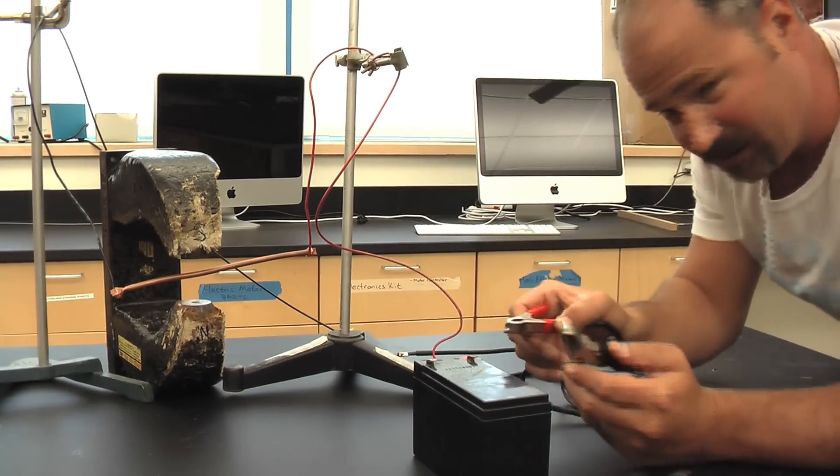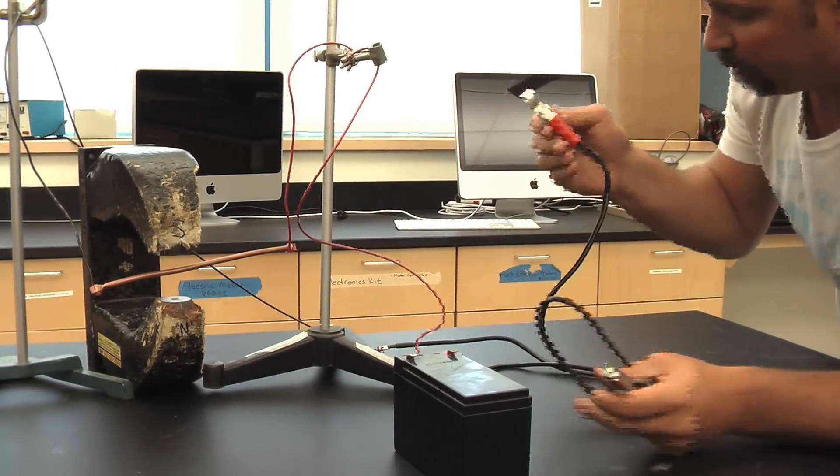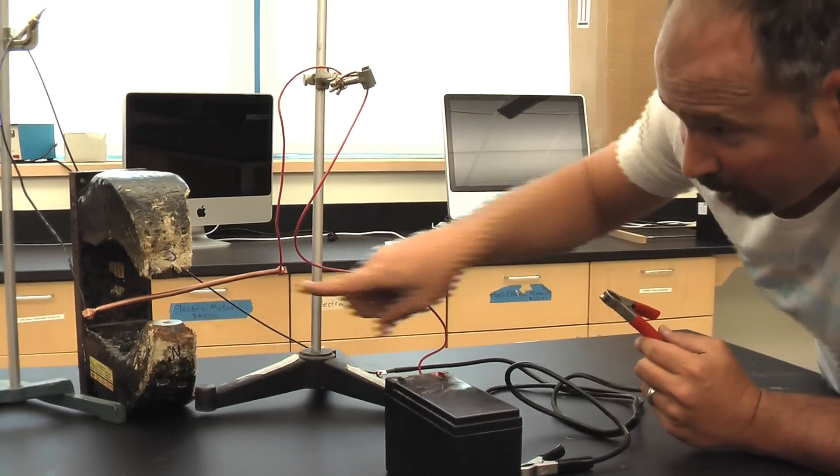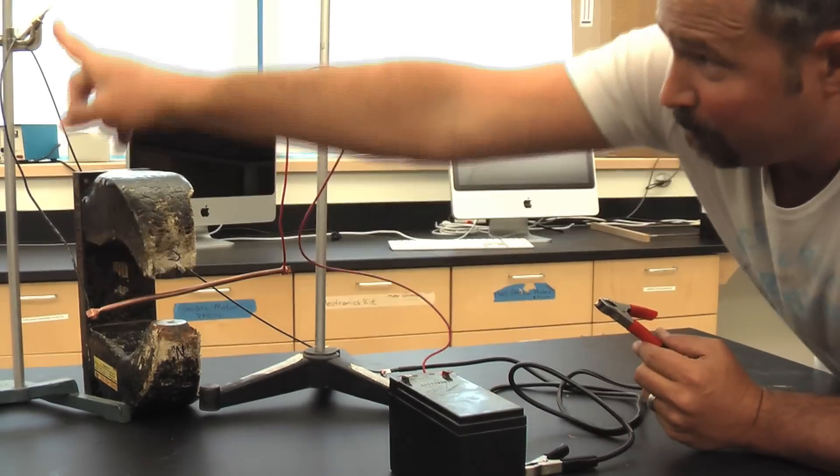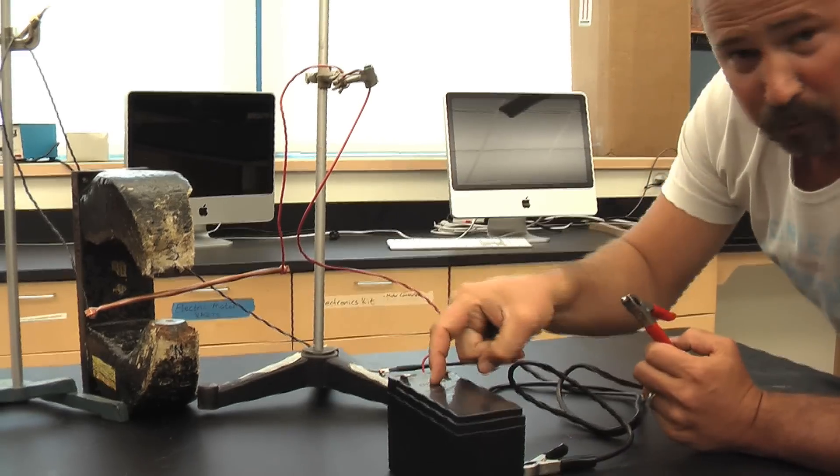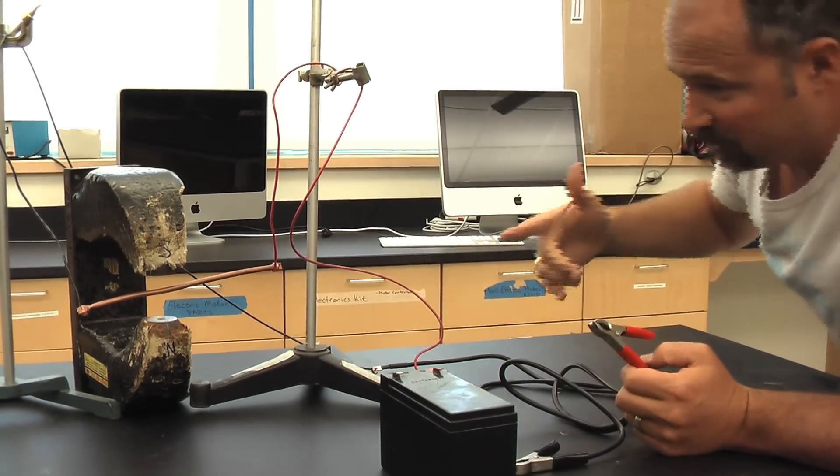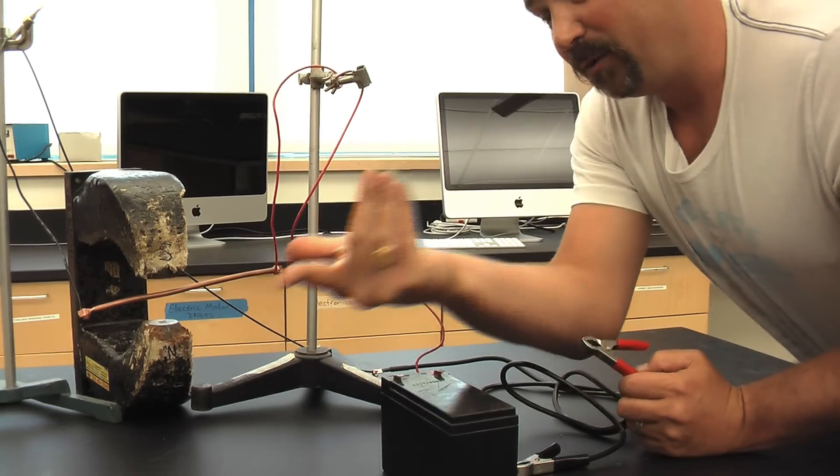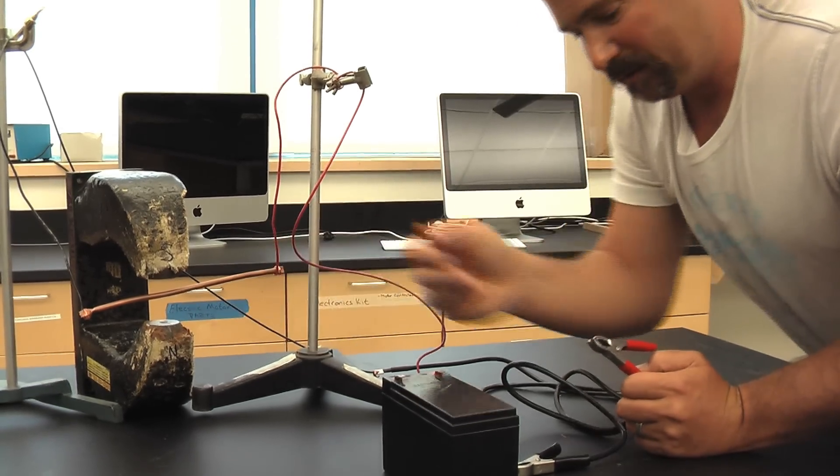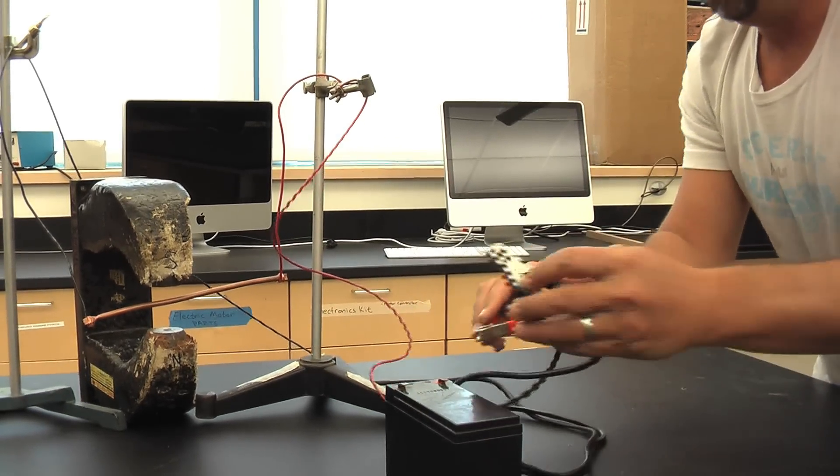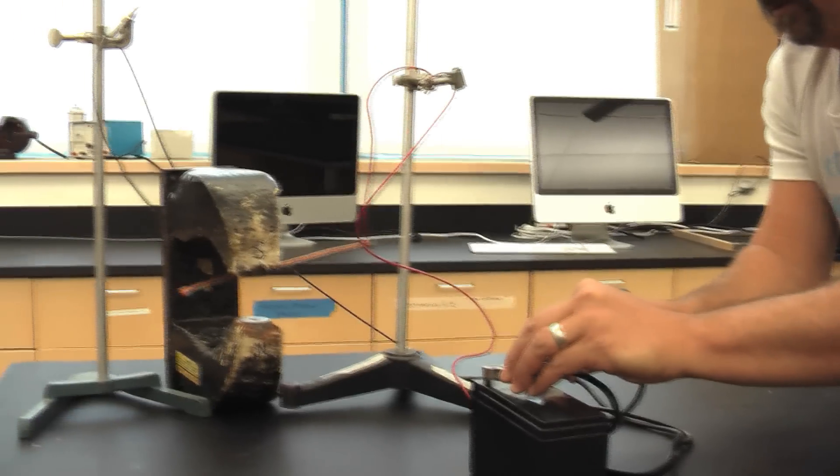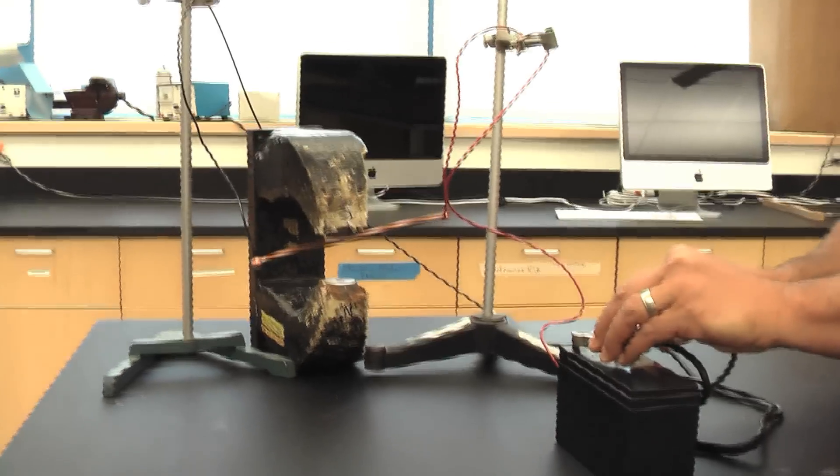When I connect these here, electricity will flow through this guy, through the red, through the copper tube, and then up through ground and then back home. So we'll have electricity flowing this way, magnet field pointing up. We expect a force inward. And sure enough, we get an inward force.